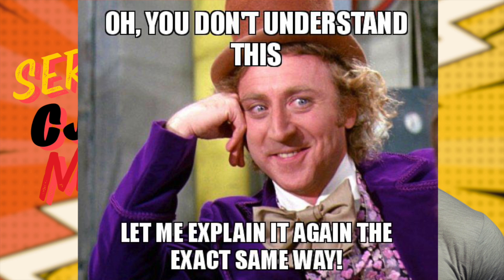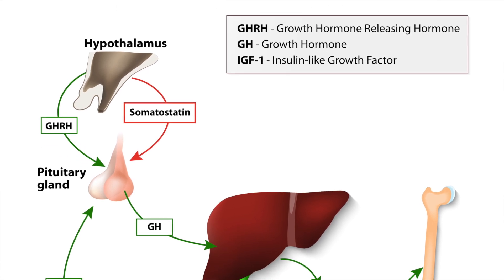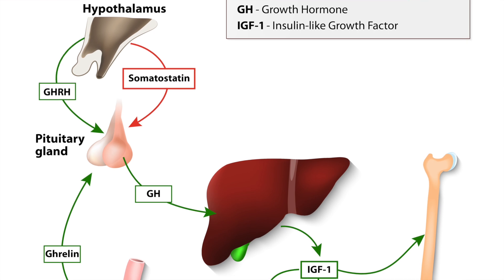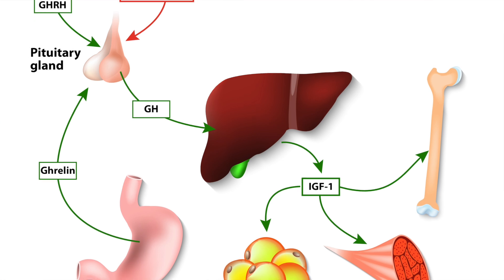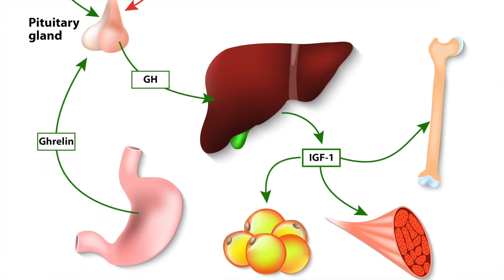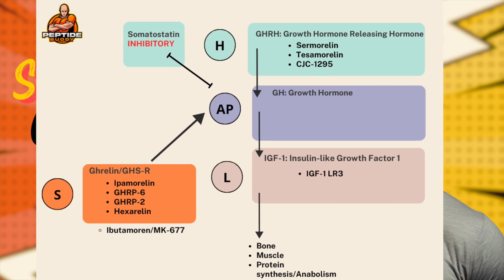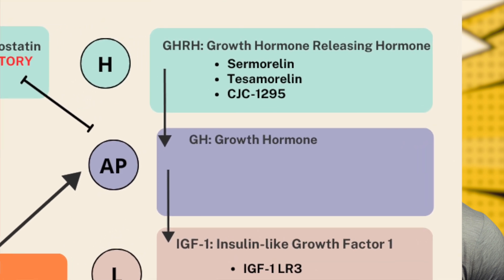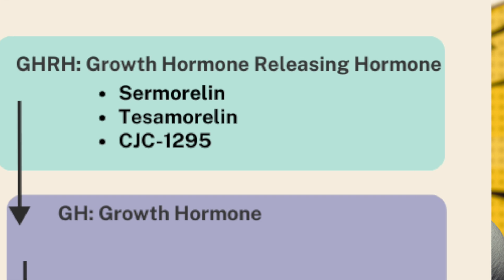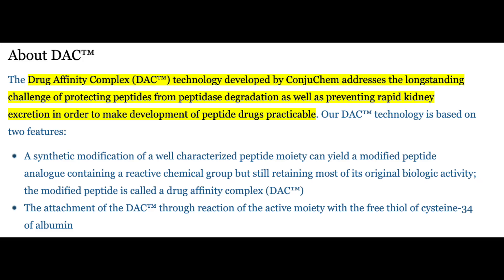By this point, we're familiar with the growth hormone-releasing hormone axis, and as such we acknowledge that peptides interact at different parts of it, albeit our understanding of some mechanisms are better than others. The GHRH mimetics — compounds that are shaped like growth hormone-releasing hormone and act like the hormone itself — include the popular ones: sermorelin, CJC-1295 with and without its drug affinity complex, modified GRF, and tesamorelin.